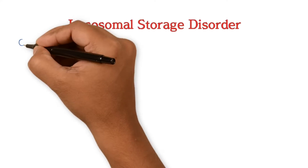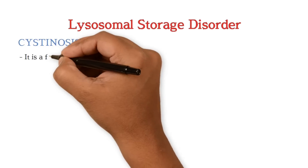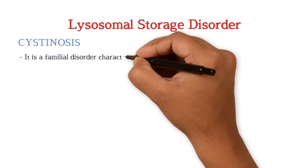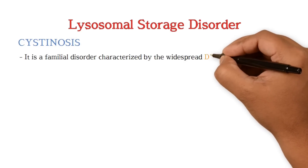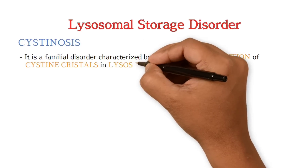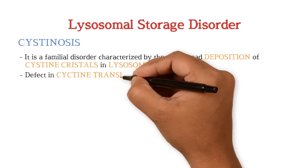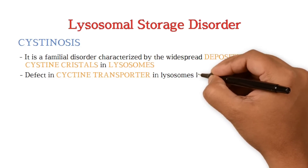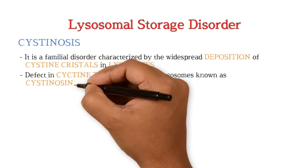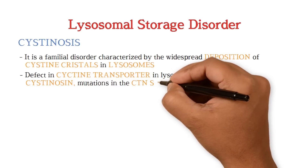The second category is lysosomal storage disorder, that is cystinosis. It is a familial disorder characterized by the widespread deposition of cystine crystals in the lysosomes. The basic defect is in the cystine transporter in lysosomes, known as cystinosin. There is a mutation in the CTNS gene.